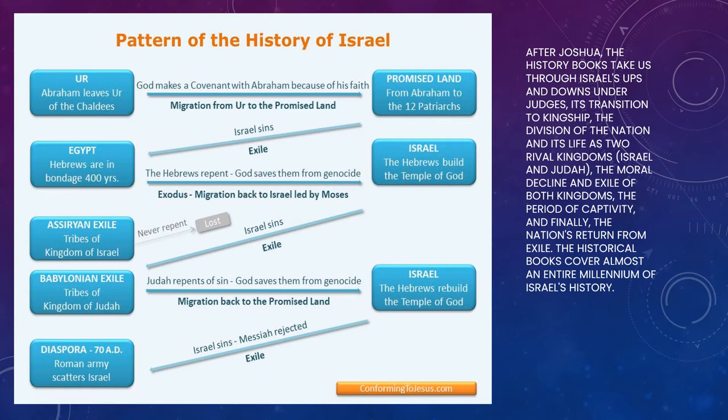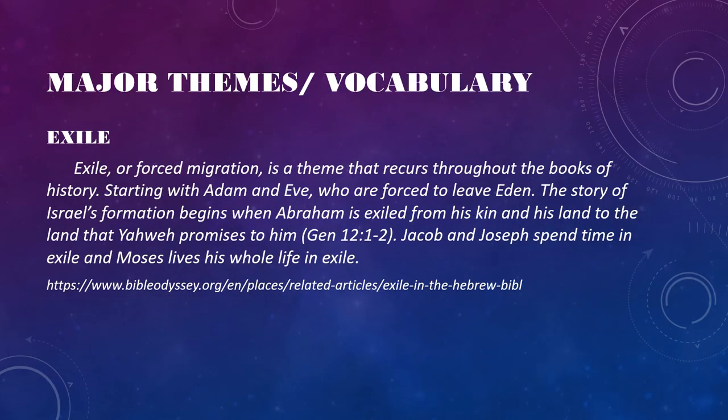Going back across the chart, the Hebrews repent and God saves them from genocide. Israel, the Hebrews, built the temple of God. Then once again they are exiled. On this chart you can see three times where they are exiled. Overall, you have this recurring pattern as the major theme and vocabulary.